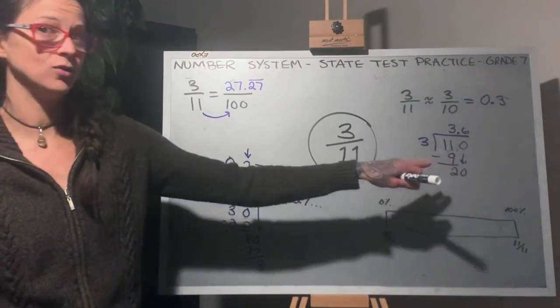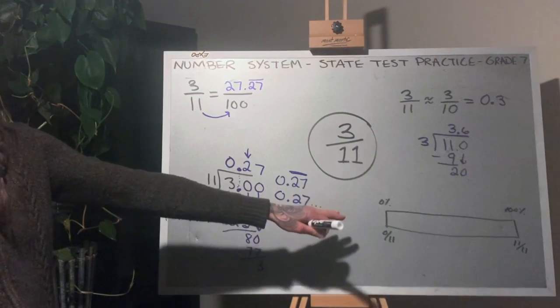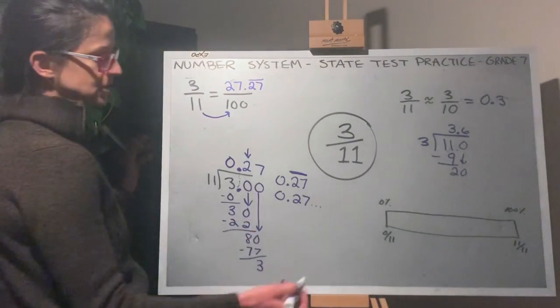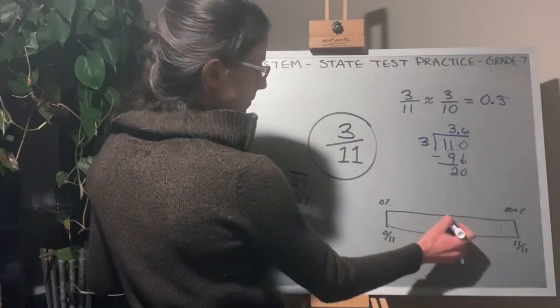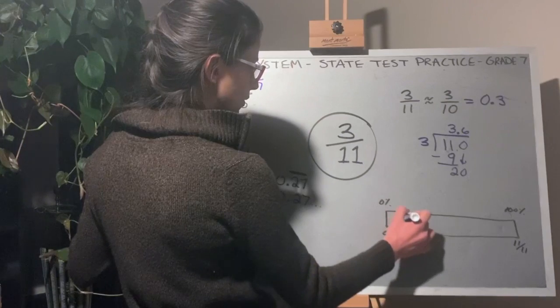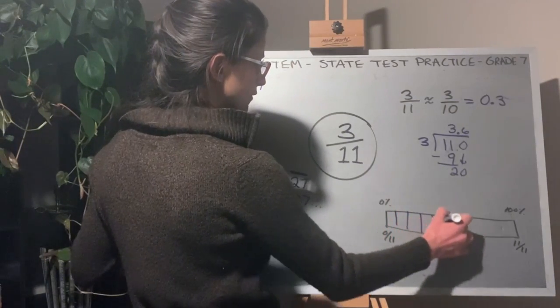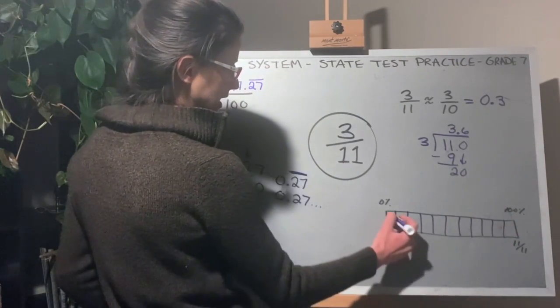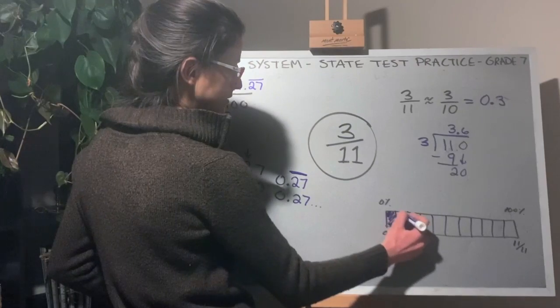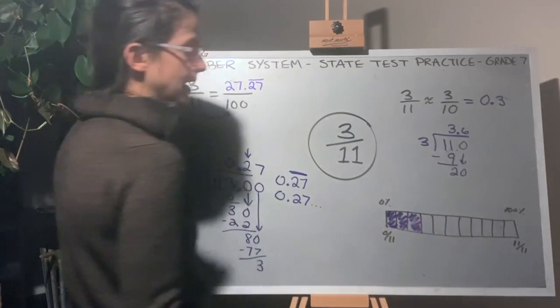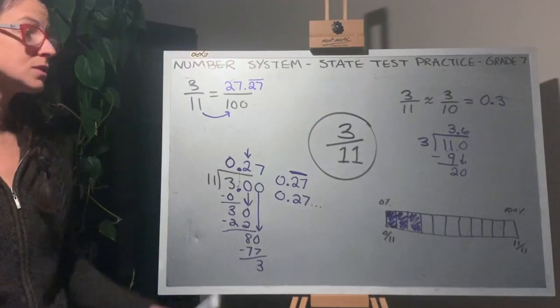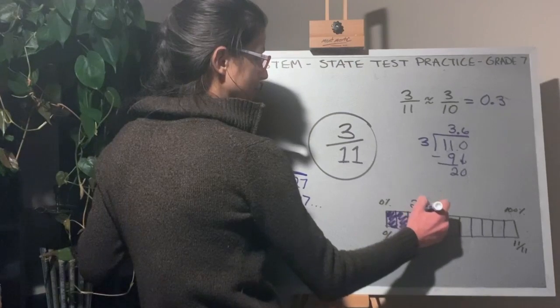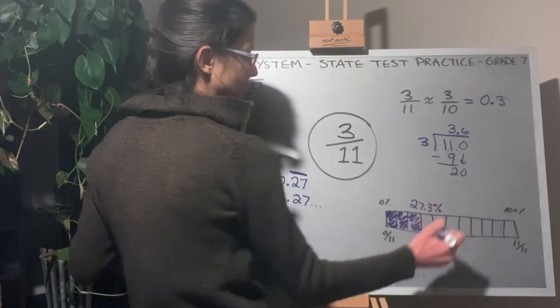On a double number line or in a ratio table, you can divide your visual up into 11 pieces: 1, 2, 3, 4, 5, 6, 7, 8, 9, 10, 11, and then shade in 3 of those. Again, that's close to 30%, but it's really actually about 27.3%.